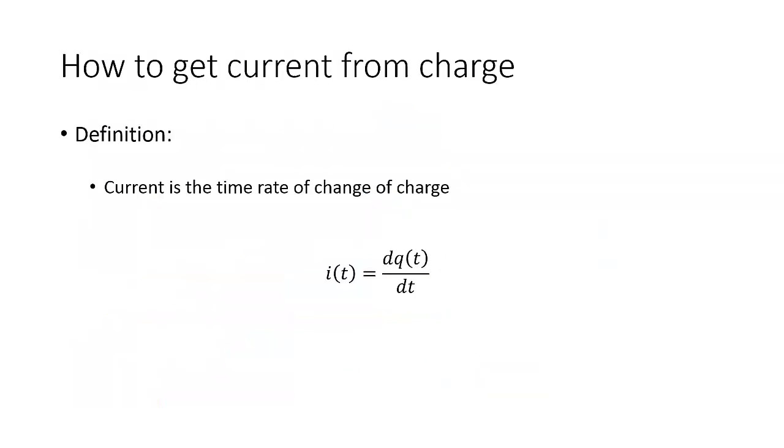Now how do you get current from charge? Luckily, there's a nice definition that follows directly from calculus. So current is the time rate of change of charge. And so this is the definition that we'll be using.